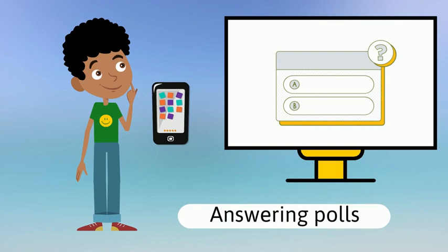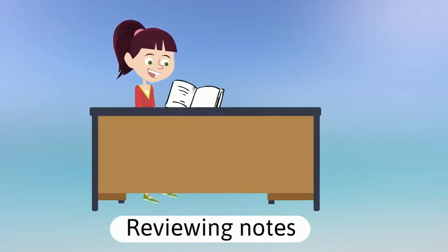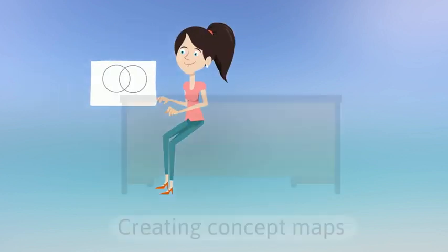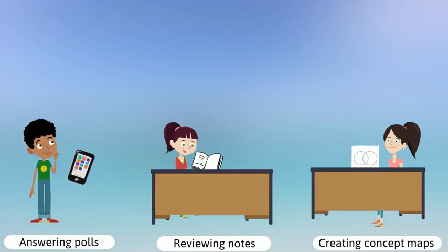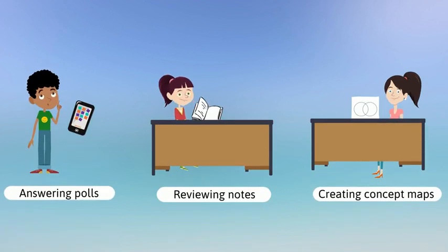Individual active learning can look like students answering polling questions about the material, pausing to review their notes, or creating concept maps of the material. Activities like these work best when you guide your students' thinking so they can see how they are learning.